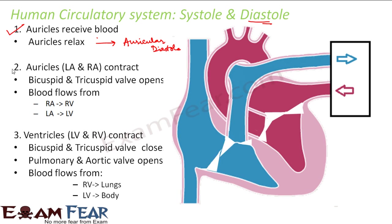Now the left auricle and the right auricle contract. Once the auricles have received blood — initially the auricles were relaxing — now both the auricles have received blood. The left auricle received the oxygenated blood from the lungs, and the right auricle received the deoxygenated blood from different body parts. Now once they have received blood, the auricles contract.